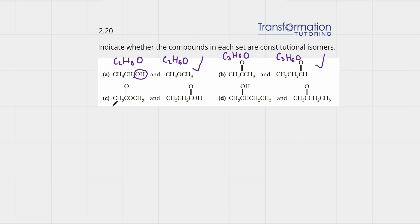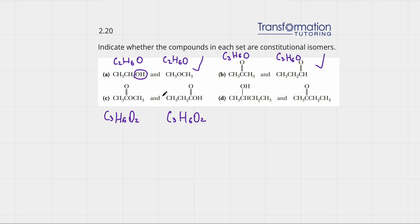Moving on to C — we have three carbons, six hydrogens, and two oxygens on the left. On the right we also have three carbons, six hydrogens, and two oxygens. So again, both of these molecules have the same formula.